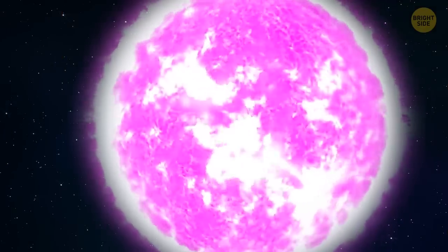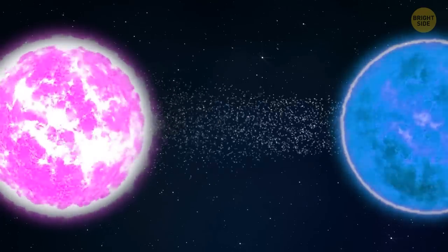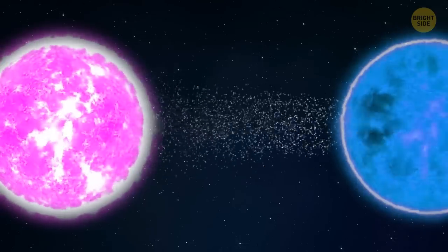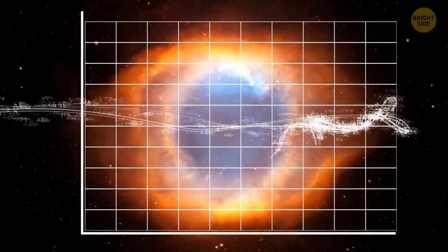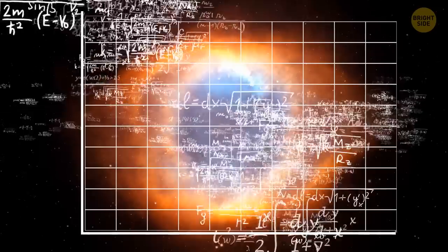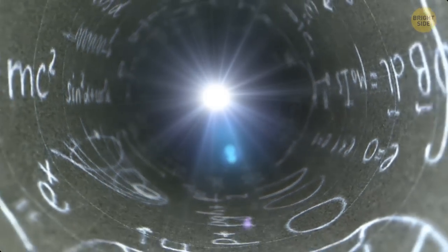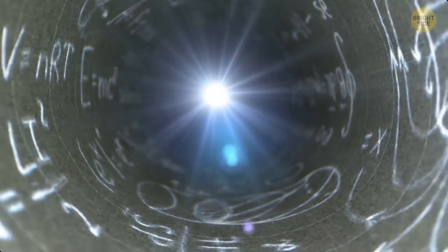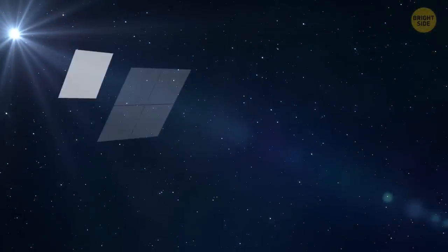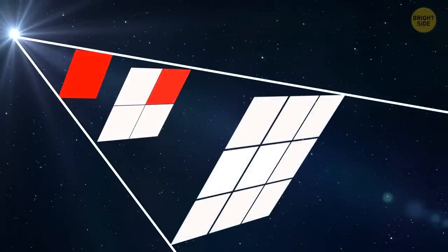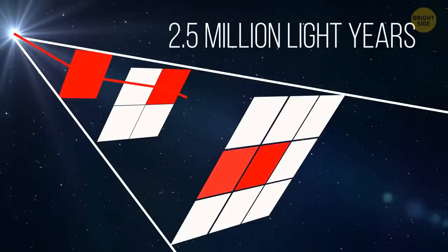A type 1A supernova appears when a white dwarf collapses under the pressure of all the gas it has been gravitationally slurping from a companion star. Looking at the Andromeda galaxy and measuring the apparent brightness of a supernova in the galaxy, it is possible to calculate its distance away from us. Because the intensity of light dims inversely with the square of its distance away, which is called the inverse square law, by comparing the apparent brightness of a supernova in the Andromeda galaxy with its absolute brightness, we get an approximate distance of 2.5 million light years.